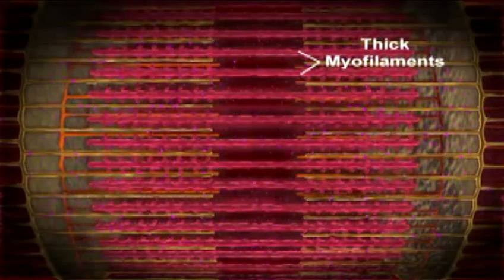A sarcomere shortens when myosin heads in thick myofilaments form crossbridges with actin molecules in thin myofilaments.